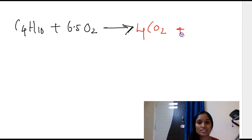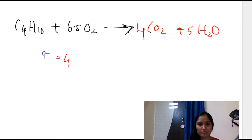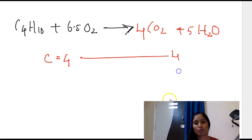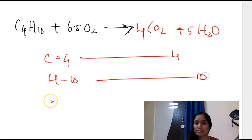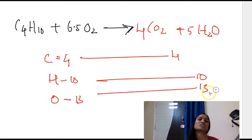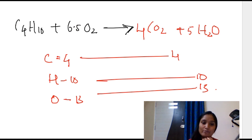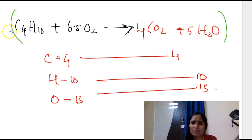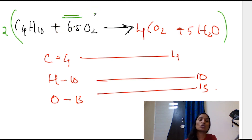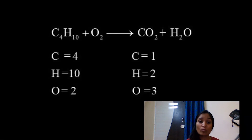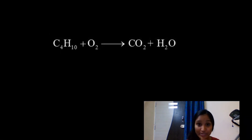Now verify: carbon — 4 on both sides ✓; hydrogen — 10 on both sides ✓; oxygen — 6.5 × 2 = 13 on the left, and 8 + 5 = 13 on the right ✓. If you're uncomfortable with decimals or fractions, you have the option to multiply the entire equation by 2 so the fraction becomes a whole number. But it's not necessary — writing fractions still earns full marks. That's how we balance this equation.